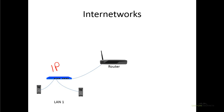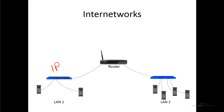In order for our computers to be able to communicate to a different network, we have to use a different device that can read IP address information, and that device is called a router. All of our computers on our local area network would be connected to a switch, that switch is typically connected to a router, which will allow our data to be sent to a different network. We can then introduce separate local area networks or different networks altogether.